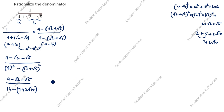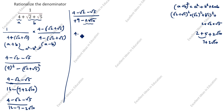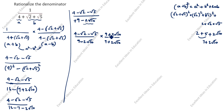So we write the expression as 4 minus root 2 minus root 5 divided by 9 minus 2 root 10. The denominator still contains an irrational number, so we rationalize again. We multiply by the conjugate: 9 plus 2 root 10 divided by 9 plus 2 root 10. Since the denominator has minus, we put plus in the conjugate.